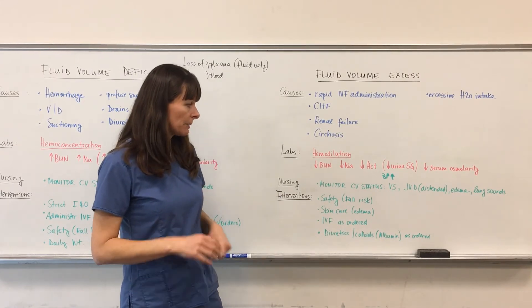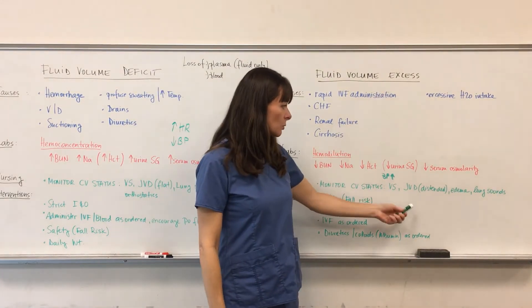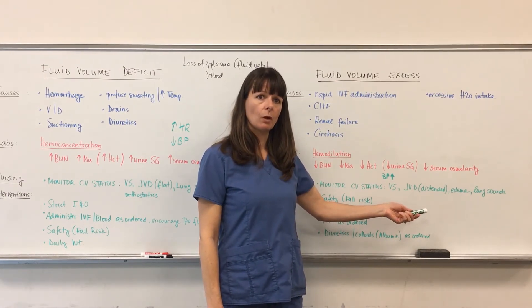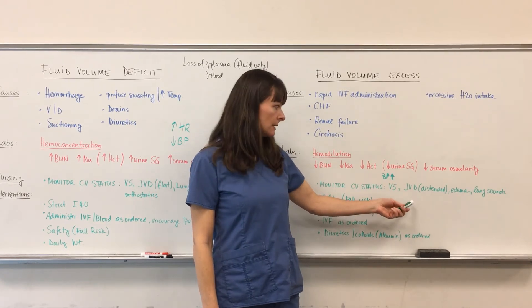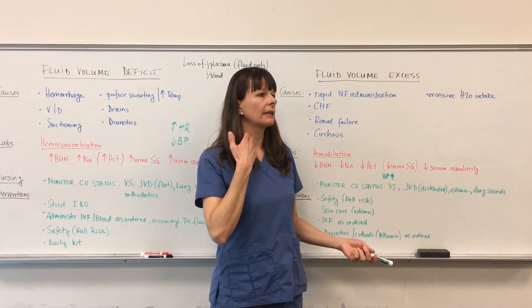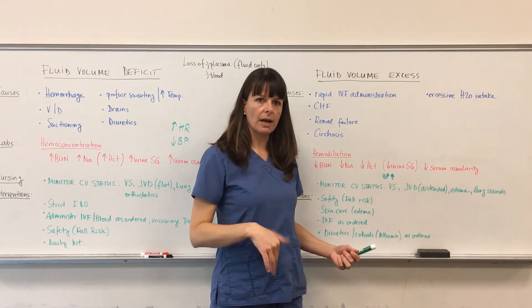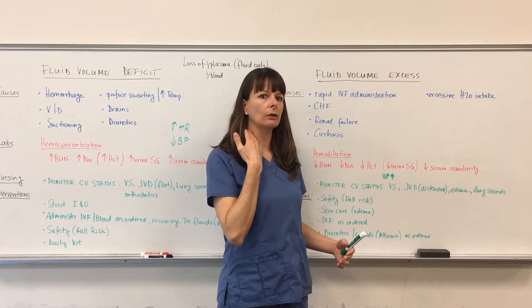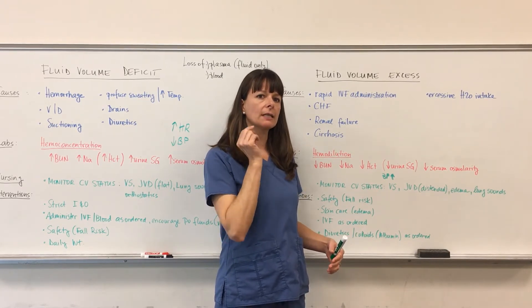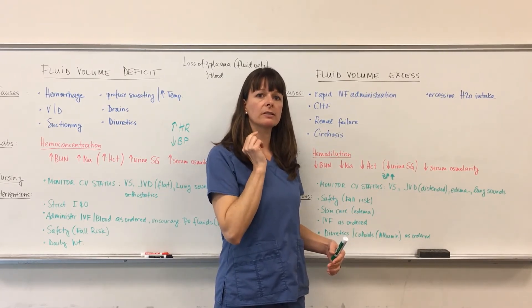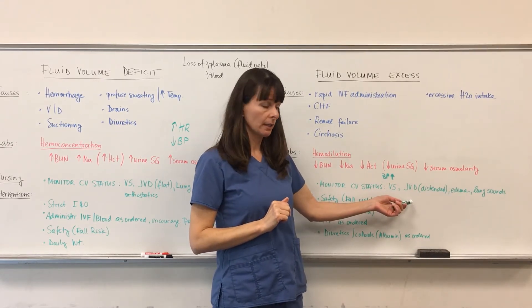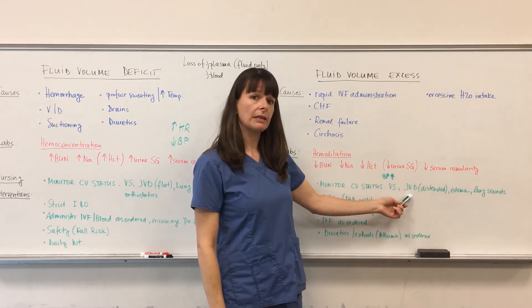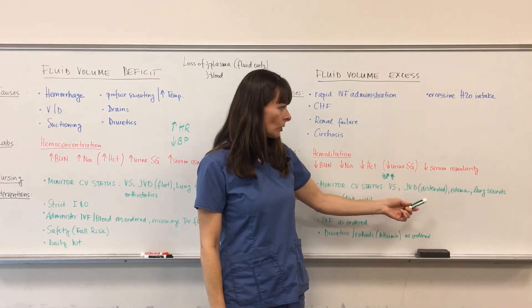But then the patient with fluid volume excess will definitely have jugular venous distension. And if you want to refer back to your textbook, then you can see how this is measured. But basically, if there is a lot of fluid in the intravascular system and the patient is sitting in bed at 45 degrees, we can measure the angle of the jugular vein. And depending on how many centimeters it is distended, it will be a positive or negative finding. And mostly in fluid volume excess, the jugular veins will be distended.